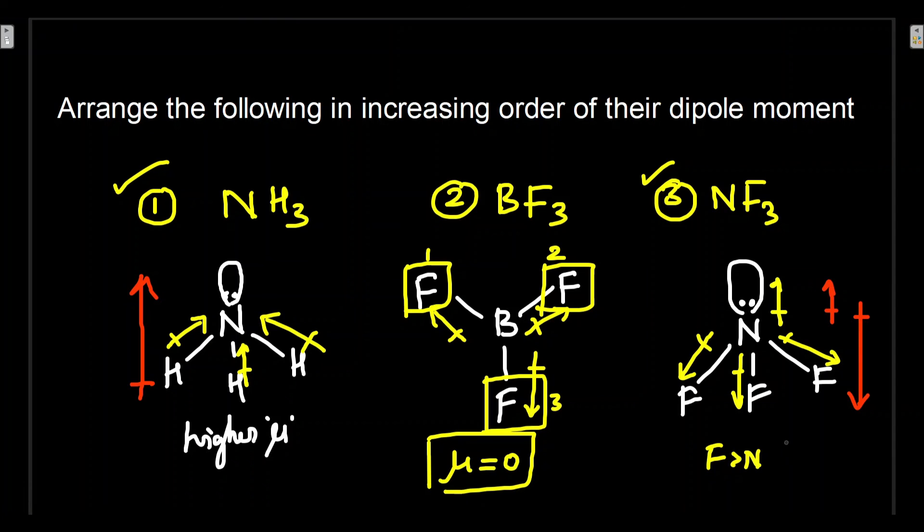Now we can arrange in the increasing order: BF3 is having the μ value smaller than NF3, which has the μ value smaller than NH3. Hope you understood the concept. We'll meet in the next class. Take care, bye.